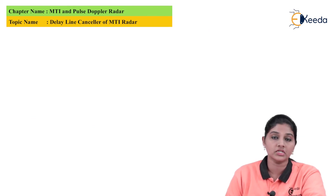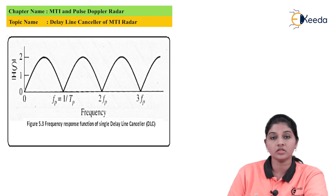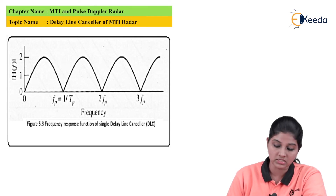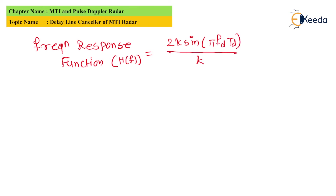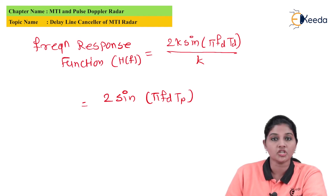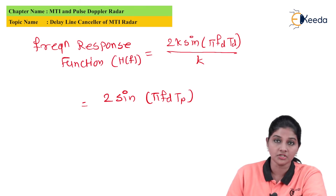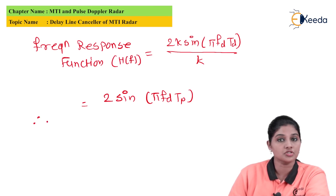Moving to the frequency response of the delay line canceler, the amplitude is divided by factor k. We obtain the frequency response function: H(f) = 2·sin(π·fd·tp). The frequency response becomes zero when the value of π·fd·tp equals nπ, i.e., at multiples of the pulse repetition frequency.